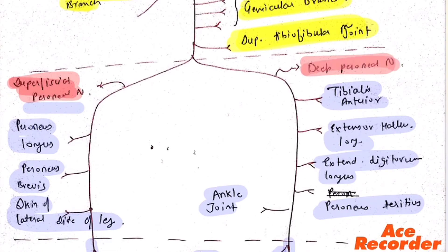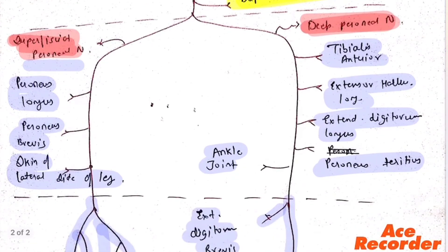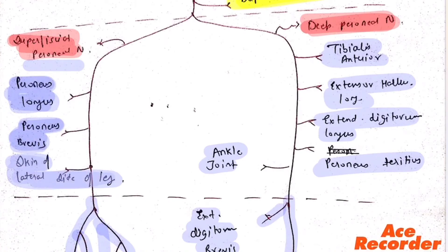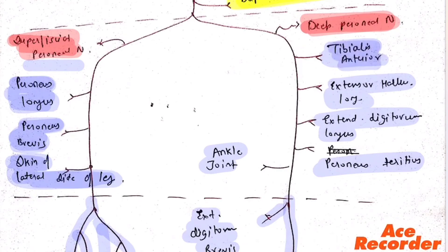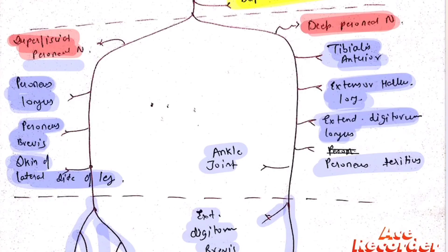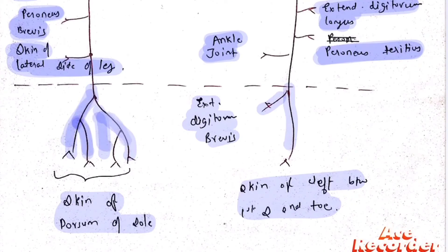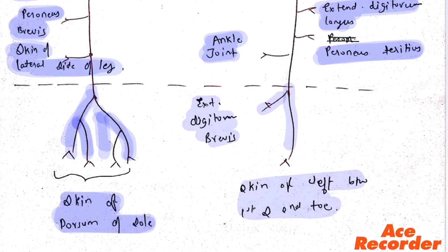The superficial peroneal nerve supplies peroneus longus, peroneus brevis, and skin of the lateral side of the leg. The deep peroneal nerve supplies tibialis anterior, extensor hallucis longus, extensor digitorum longus, peroneus tertius, and the ankle joint. The superficial branch further supplies skin of the dorsum of the sole, extensor digitorum brevis, and skin of the cleft between the first and second toe.